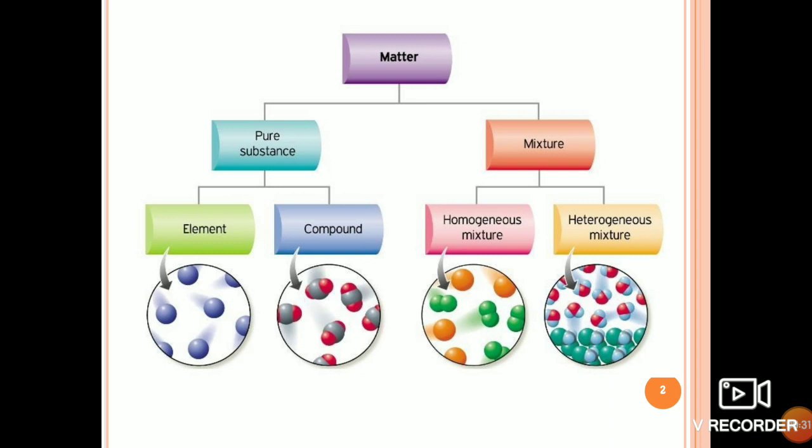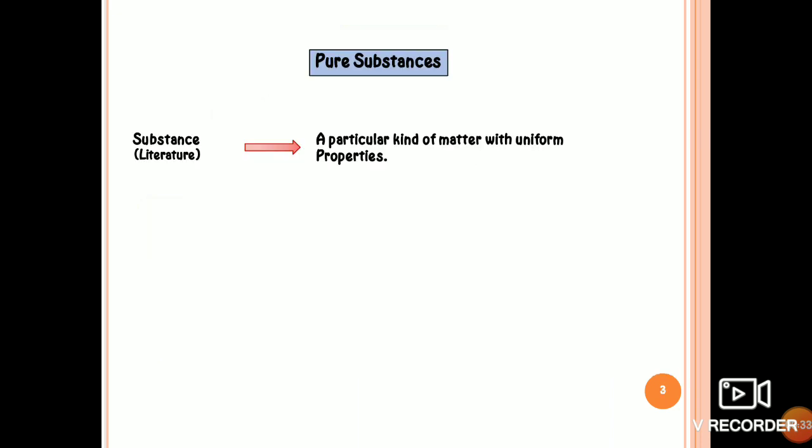Now we will study about each of them in a detailed manner. In literature, the word substance means a particular kind of matter with similar properties. Thus, a pure substance is matter which is made up of only one kind of units, not several different kinds of units.